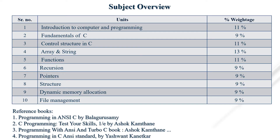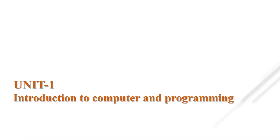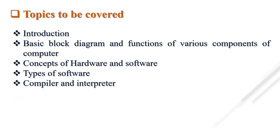There are 10 units in this subject, and the best reference book for Programming for Problem Solving is Programming in ANSI-C by Balagurusamy, which covers all units 1 through 10 in a single book. The topics covered in this video are Introduction to Computer and Programming Language, Basic Block Diagram and Functions of various components of Computer, Concept of Hardware and Software, Types of Software, and Compiler and Interpreter.